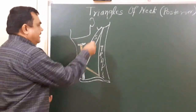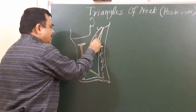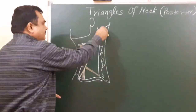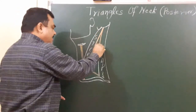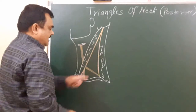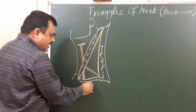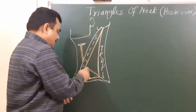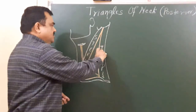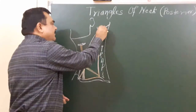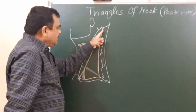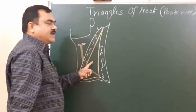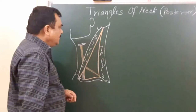Here you can see the boundary of the posterior triangle. The anterior boundary is formed by the posterior border of the sternocleidomastoid. The posterior boundary is formed by the anterior border of the trapezius. The inferior boundary is formed by the upper surface of the middle one-third of the clavicle. The apex is formed at the superior nuchal line where the anterior and posterior boundaries meet.